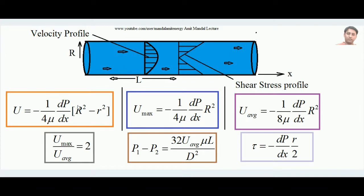The formula has three parts: (1/4μ), (dp/dx), and (R² − r²). Here μ is the fluid viscosity, dp/dx is the pressure gradient in the x-direction, R is the fixed pipe radius, and small r is the radial distance from the centerline to the point of interest.